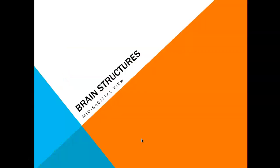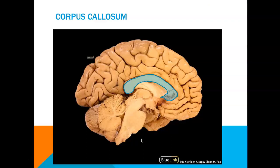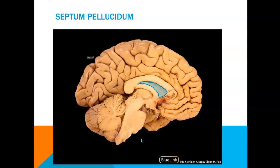Now let's move into a mid-sagittal view. The highlighted portion is your corpus callosum, which allows the right cerebral hemisphere to communicate with the left cerebral hemisphere. Inferior to the corpus callosum, we have a wall that sits between our two lateral ventricles called the septum pellucidum. The word septum means wall.